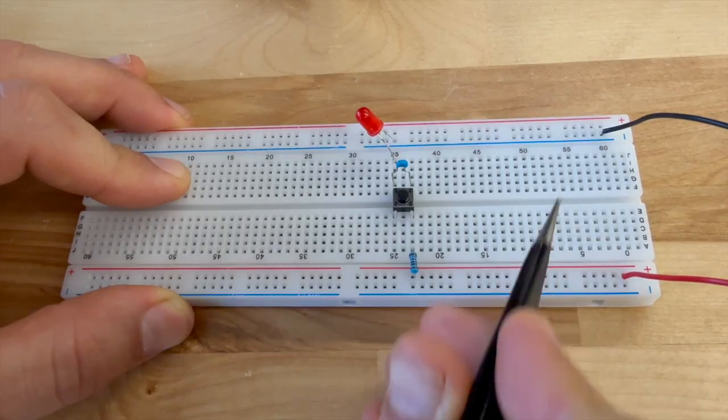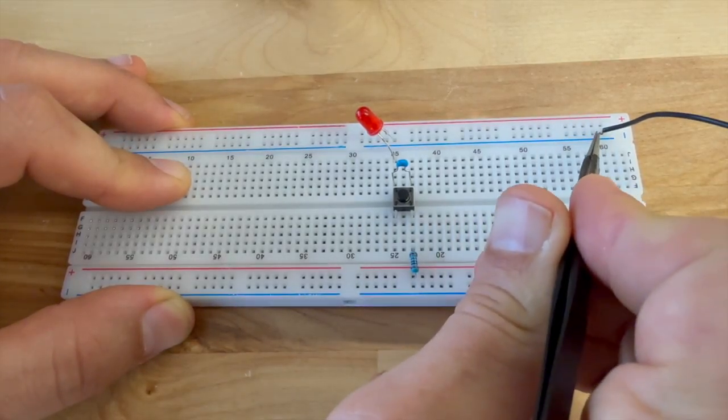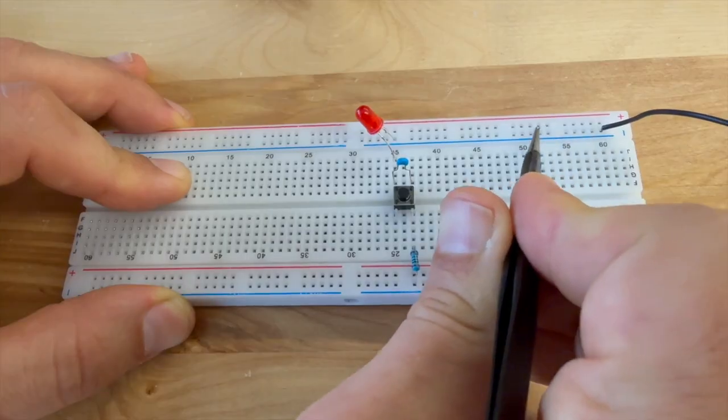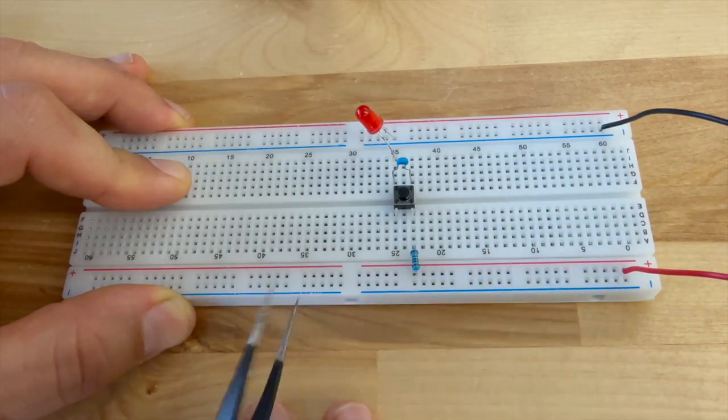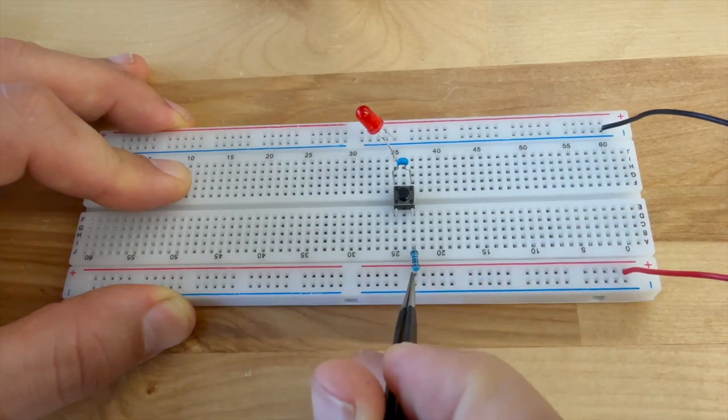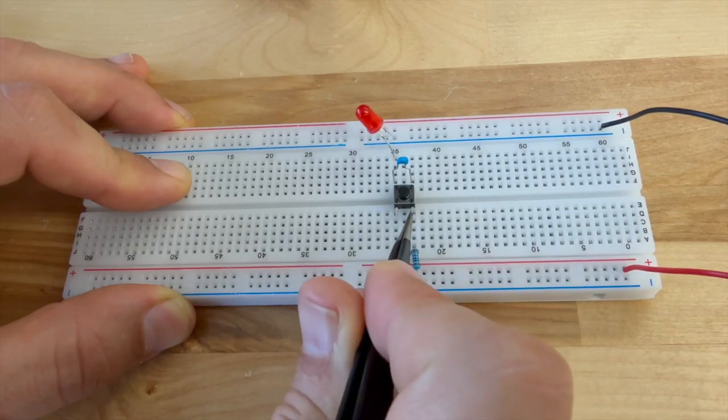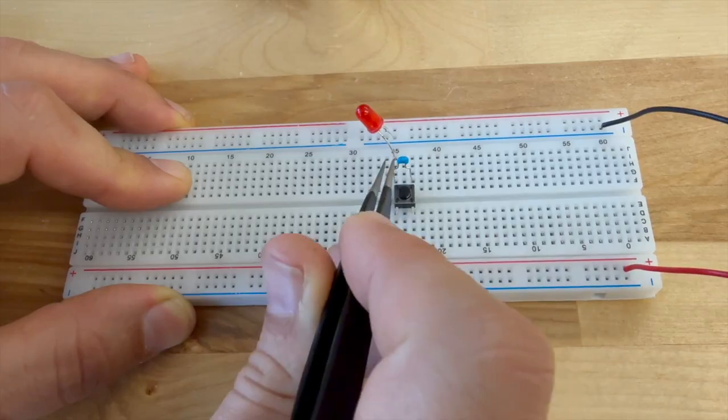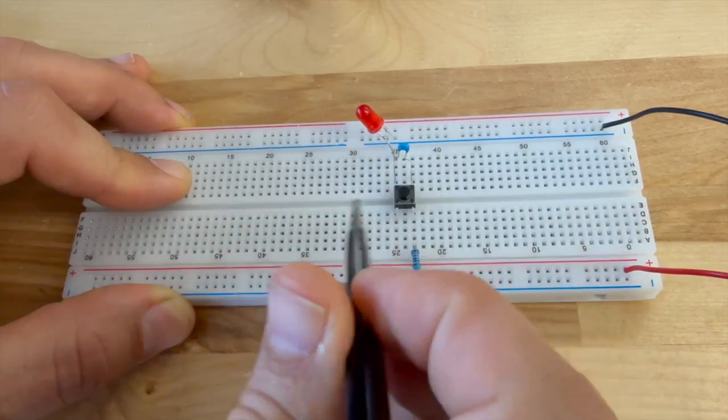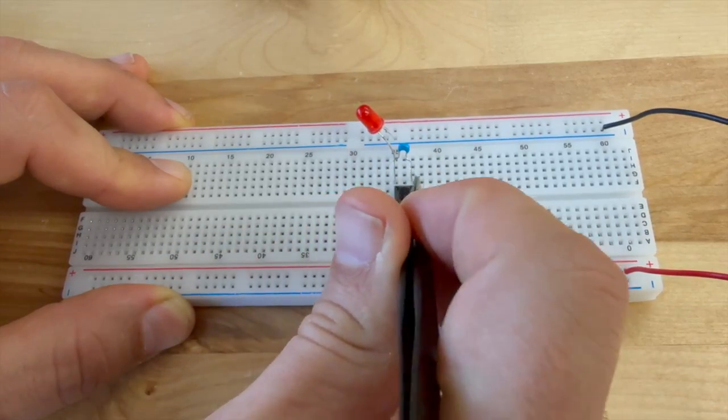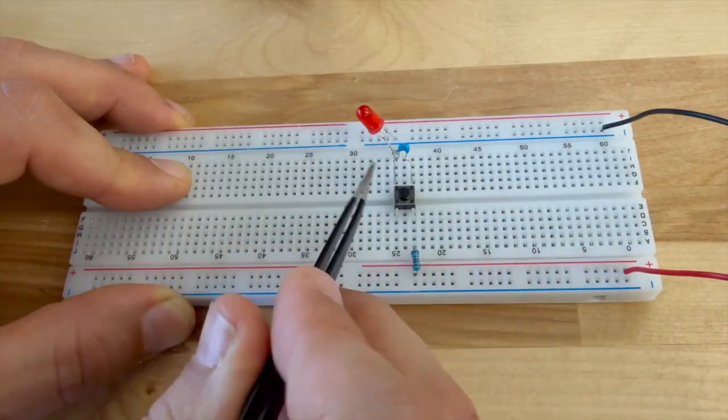So here we have a simple button debouncing circuit. We have our supply coming in into our negative and positive rails right here. We have a resistor connecting here to the same terminal strip as this part of the push button. We have a capacitor that is connected to both legs of our push button there.